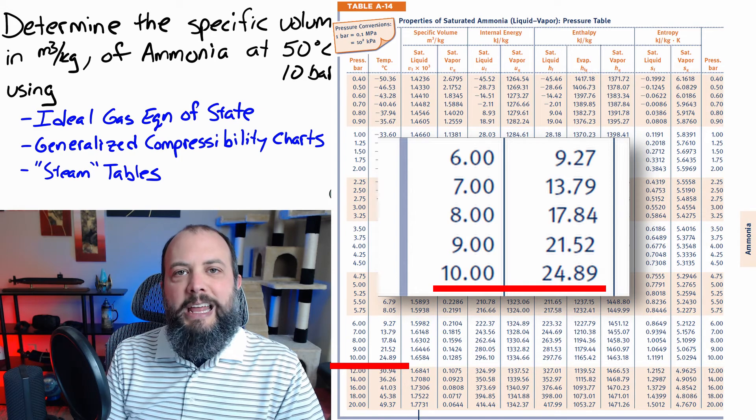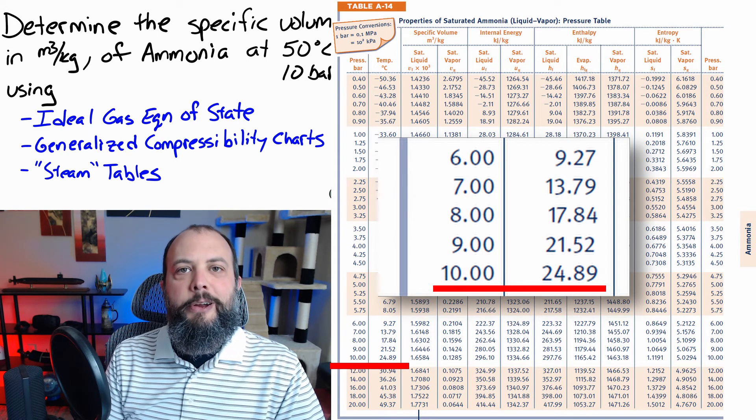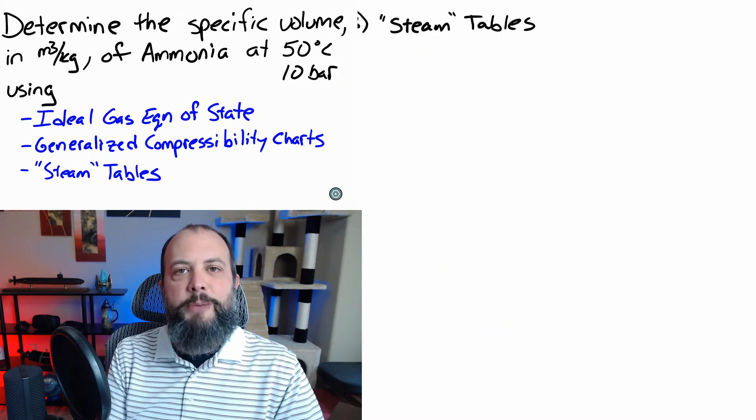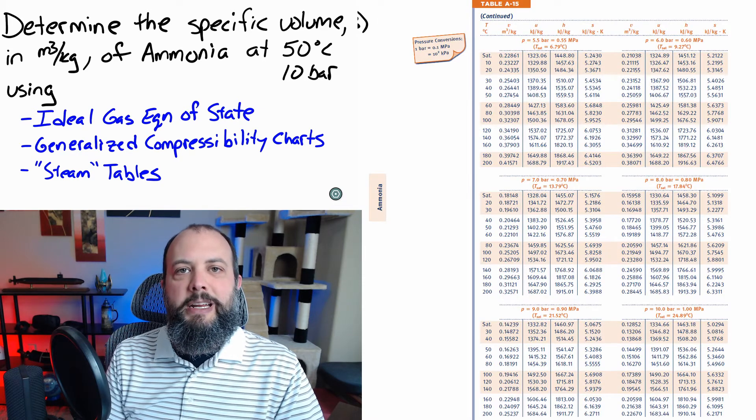But we can check the saturated table real quick just to verify this. And if you look at the 10 bar line, you'll see that the temperature is actually much lower than our 50 degrees Celsius we were given in this problem. Since our temperature is higher than the saturation temperature, that means it's a superheated gas. So, we flip to the next page, to the superheated gas tables,